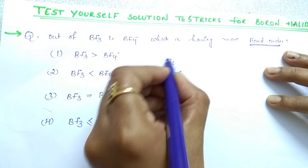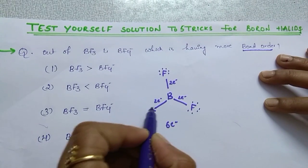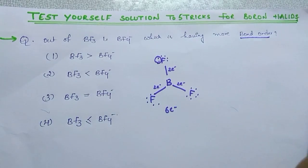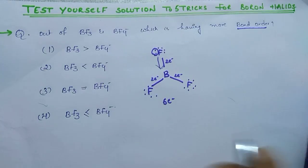Then what happens is, whatever the lone pair is present on fluorine, all fluorine having 3 lone pairs, right? Here 3, here 3. One of the lone pairs it donates to the boron and in this way back bonding takes place.